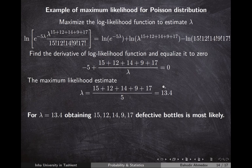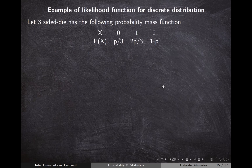The result is λ = (15+12+14+9+17)/5 = 13.4. The conclusion is that for λ = 13.4, obtaining this data is most likely.